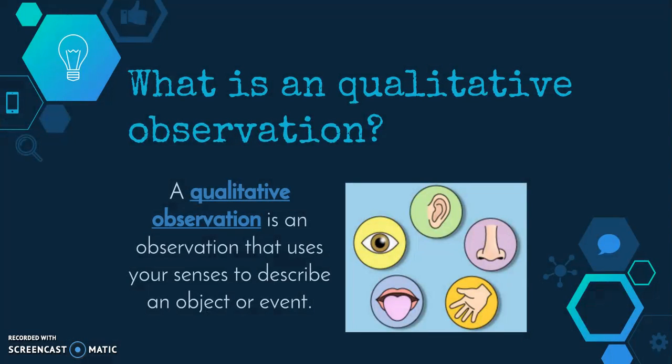Qualitative observations, on the other hand, use our senses like our sight, hearing, smell, taste, and touch. Anytime we're using our senses to describe an observation or describe an object or event, that's going to go under qualitative observations. They're not going to use numbers that we could record in a data table. They're going to be extremely detailed and would go under a data table for collection. However, the detailed descriptions can't be converted into a graph most of the time because they're not going to include numbers. However, they're still extremely valuable to our investigations.